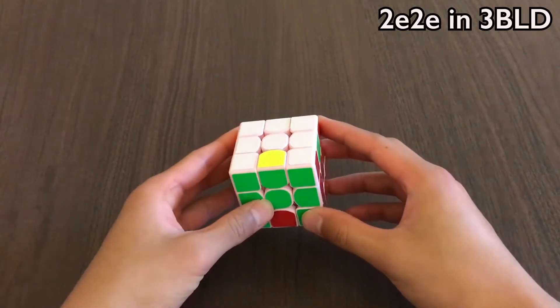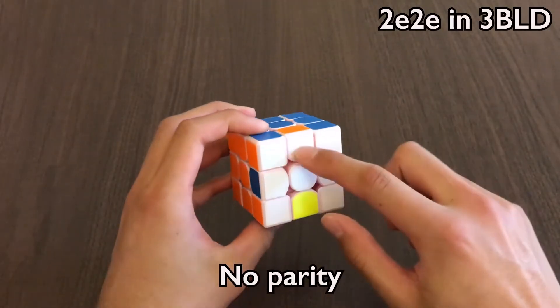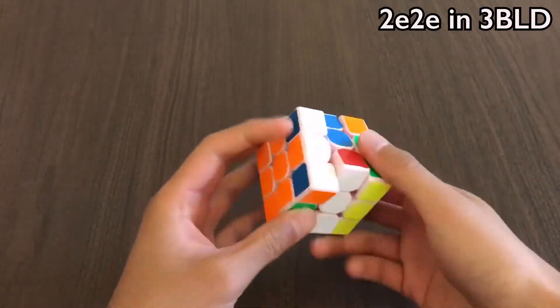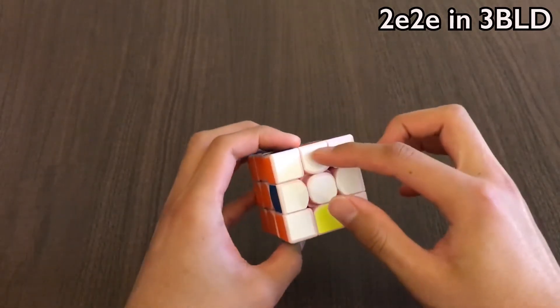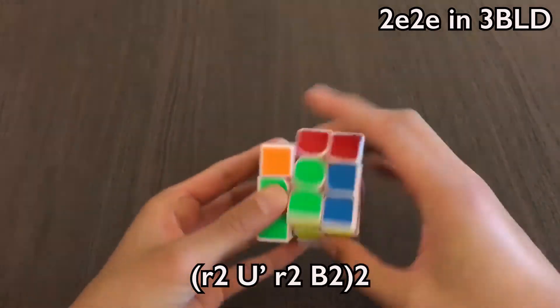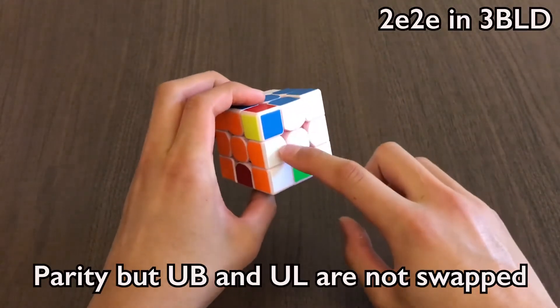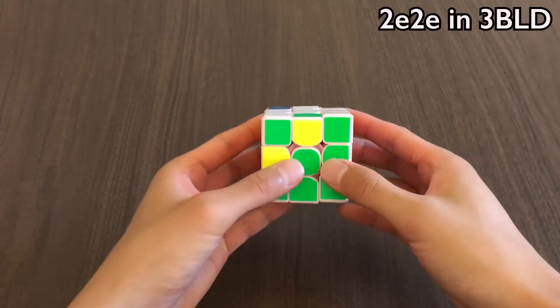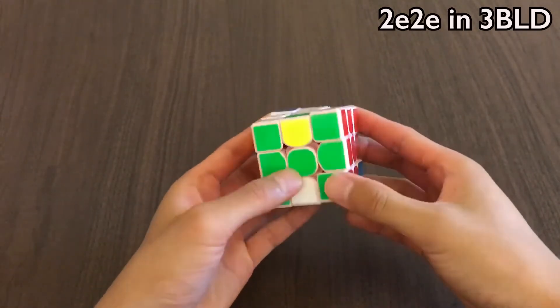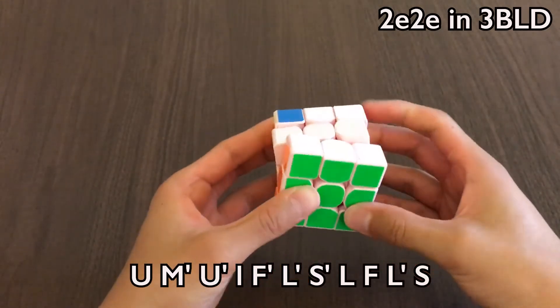The only time 2E2E is useful in 3-blind is for something like this. There's no parity, but UB and UL are swapped. So what we can do is, after the first comm, instead of breaking into a new cycle and then doing another comm, we can just do one 2E2E. Similarly, we might have parity, but UB and UL are not swapped. So after the first edge comm, instead of breaking into a new cycle, we can just do a 2E2E and then solve corners.